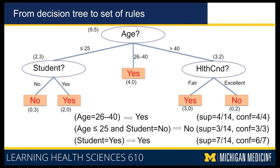Another rule: if age is less than 25 and student is no, the label is no — support 3 out of 14, confidence 100%. From the pruned student-first tree, the rule 'if student is yes, label is yes' has support 50% (7 out of 14) and confidence 6 out of 7, since one instance had student yes but label no. This shows that age and student appear to be stronger features for this dataset.